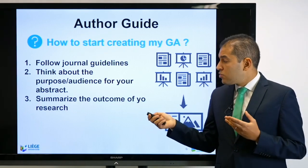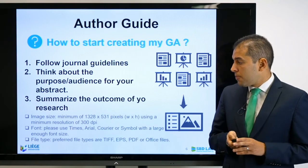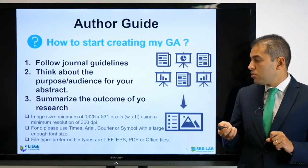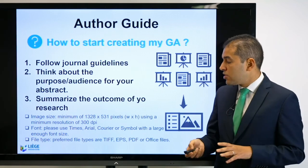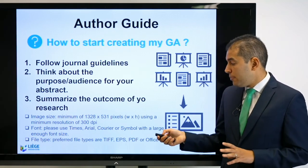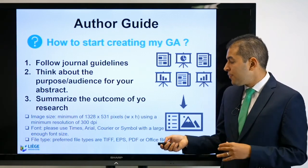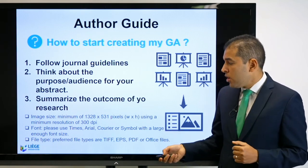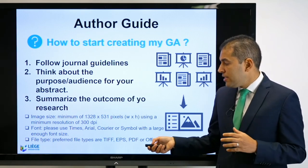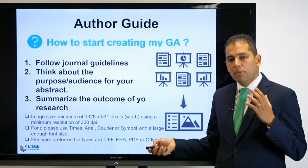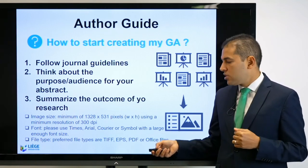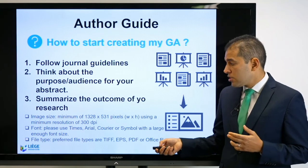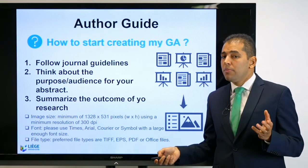The abstract has to summarize the outcome of your research. I advise you to use an image with a minimum of 1328 by 531 pixels, width by height, using a minimum resolution of 300 dpi. Also, I advise you to use formal, rigorous fonts like Times, Arial, Courier, or Symbol, with enough font size — minimum 18.